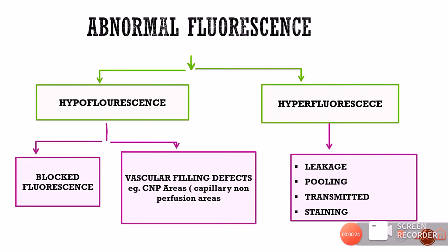The abnormal fluorescence can be divided into two types: hypofluorescence, when the intensity of fluorescence is less, and hyperfluorescence, when the intensity of fluorescence is more. Under hypofluorescence, we can divide it into two parts: number one is blocked fluorescence and number two is vascular filling defect — for example, capillary non-perfusion areas. Hyperfluorescence is divided into four parts: leakage, pooling, transmitted fluorescence, and staining.